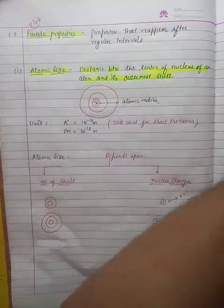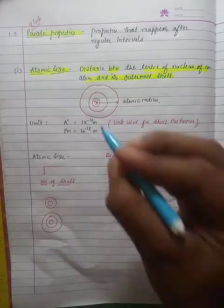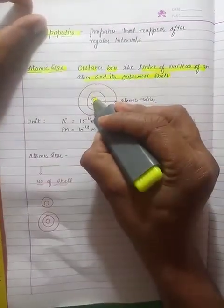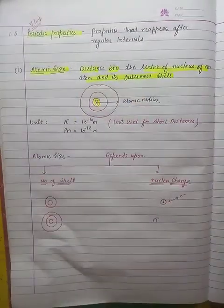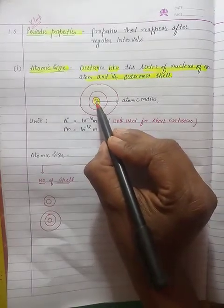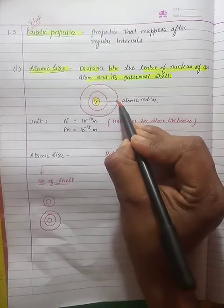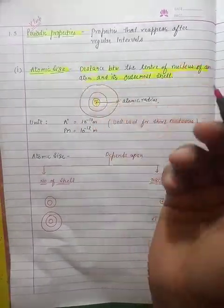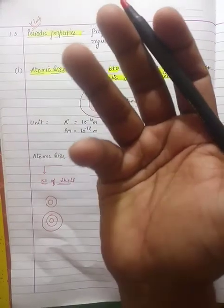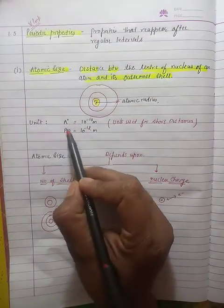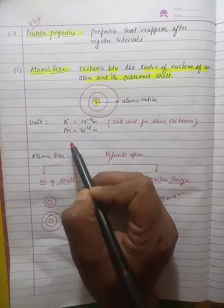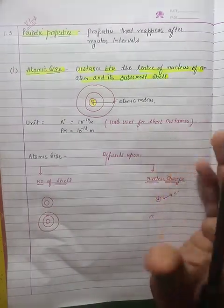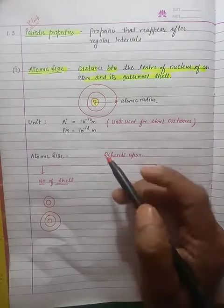The distance from the center of the nucleus to the outermost shell — the last shell electrons — is known as the atomic radius, or atomic size. The unit used for atomic size is angstrom or picometer, as these are units used for very short distances, unlike meter or kilometer.